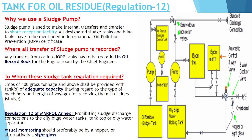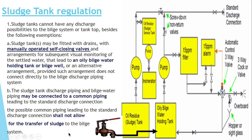Regulation 12 of MARPOL Annex 1 basically states that it prohibits the sludge discharge connection to the oily bilge water tank, tank top, or oily water separator. Visual monitoring should be provided by a hopper tank or a sight glass. You should have visual monitoring.